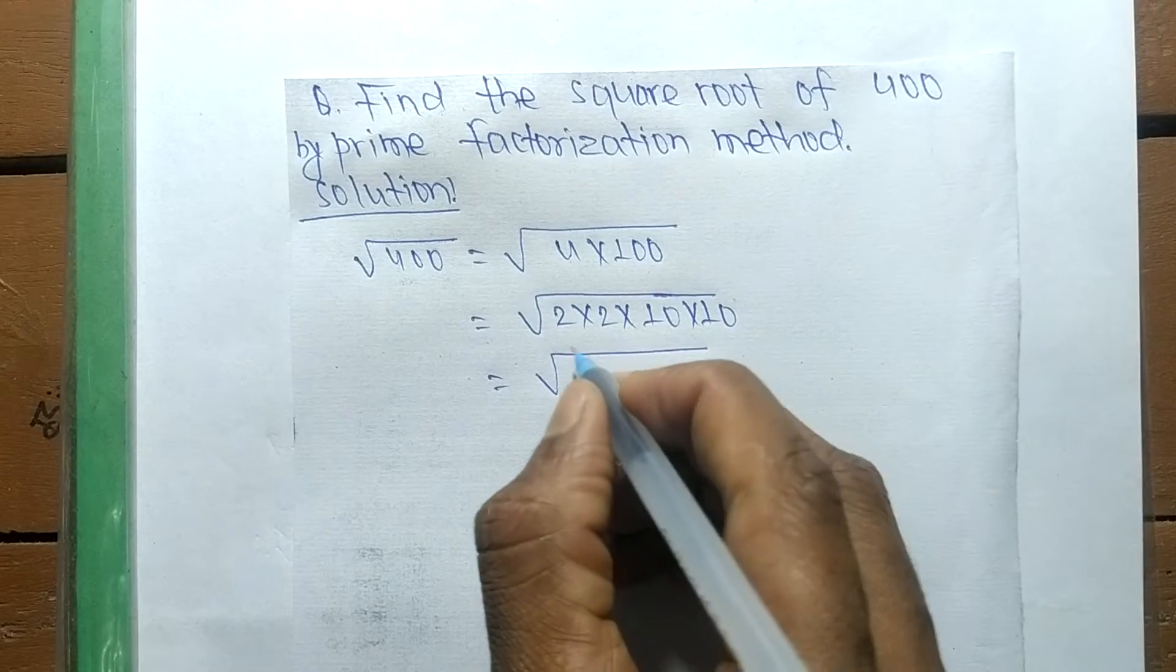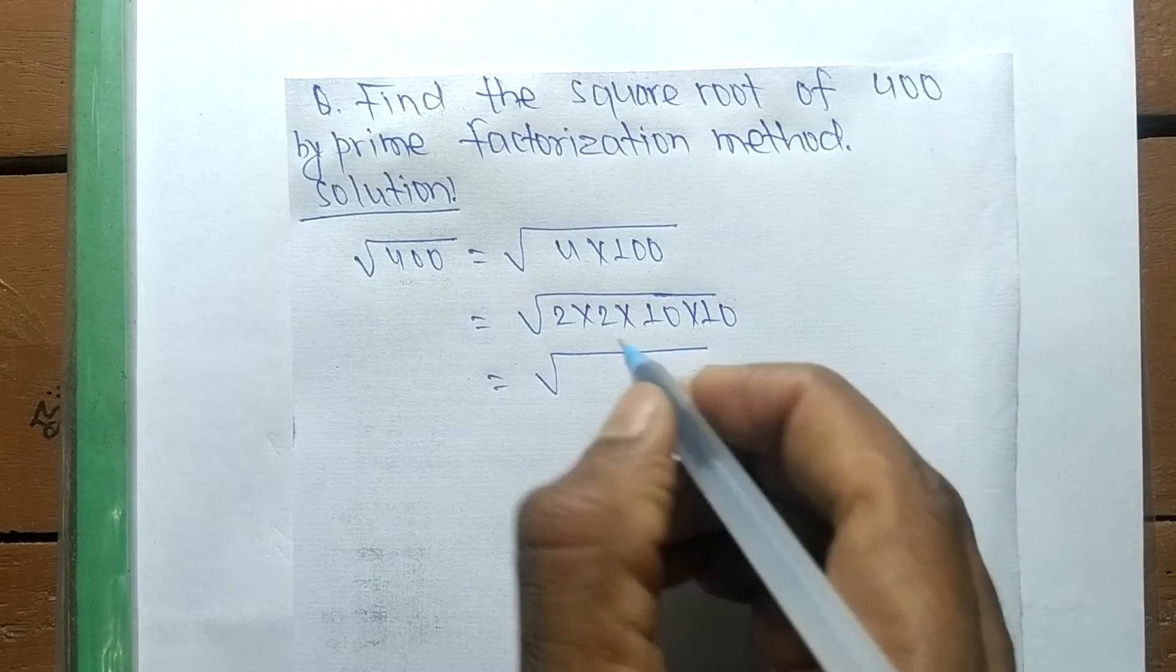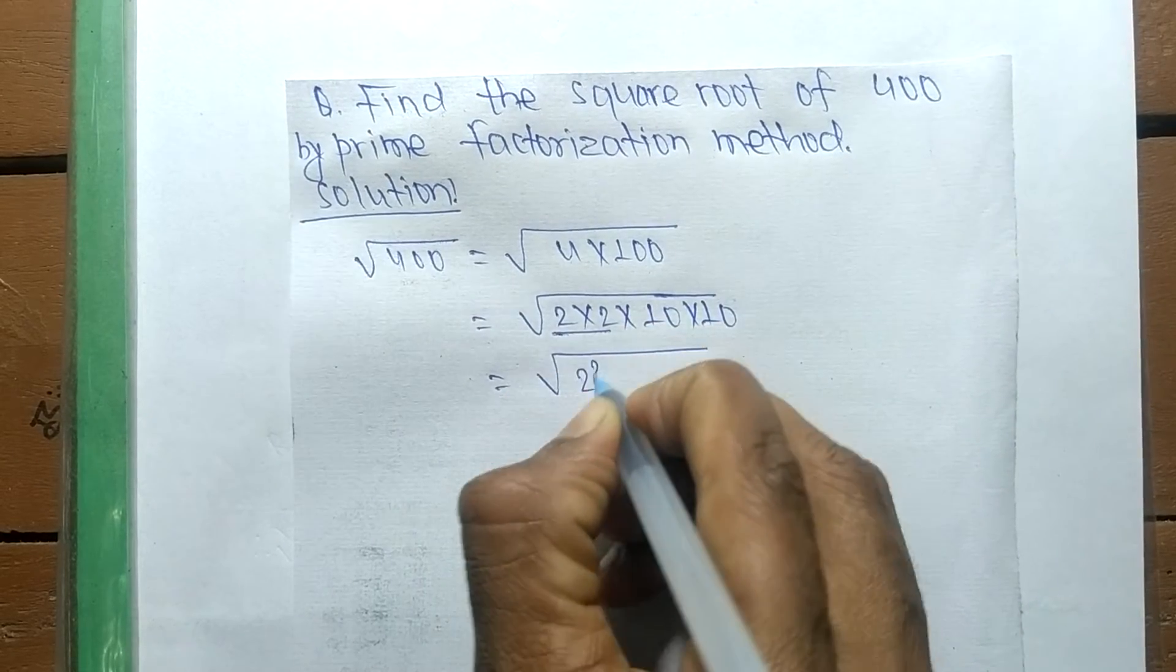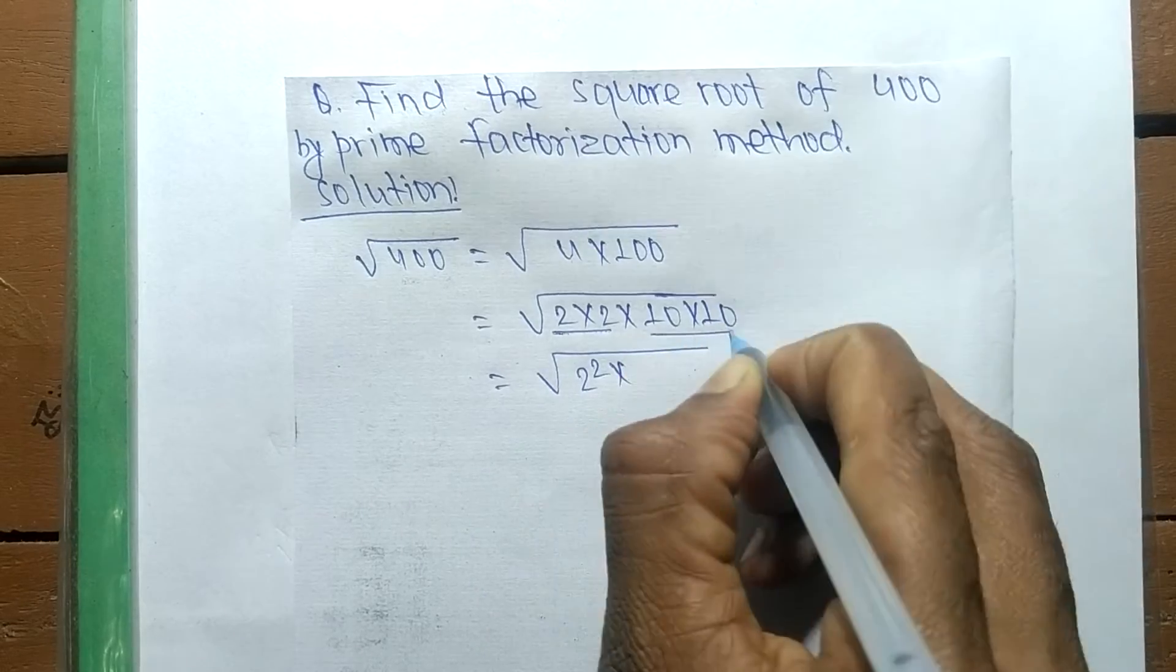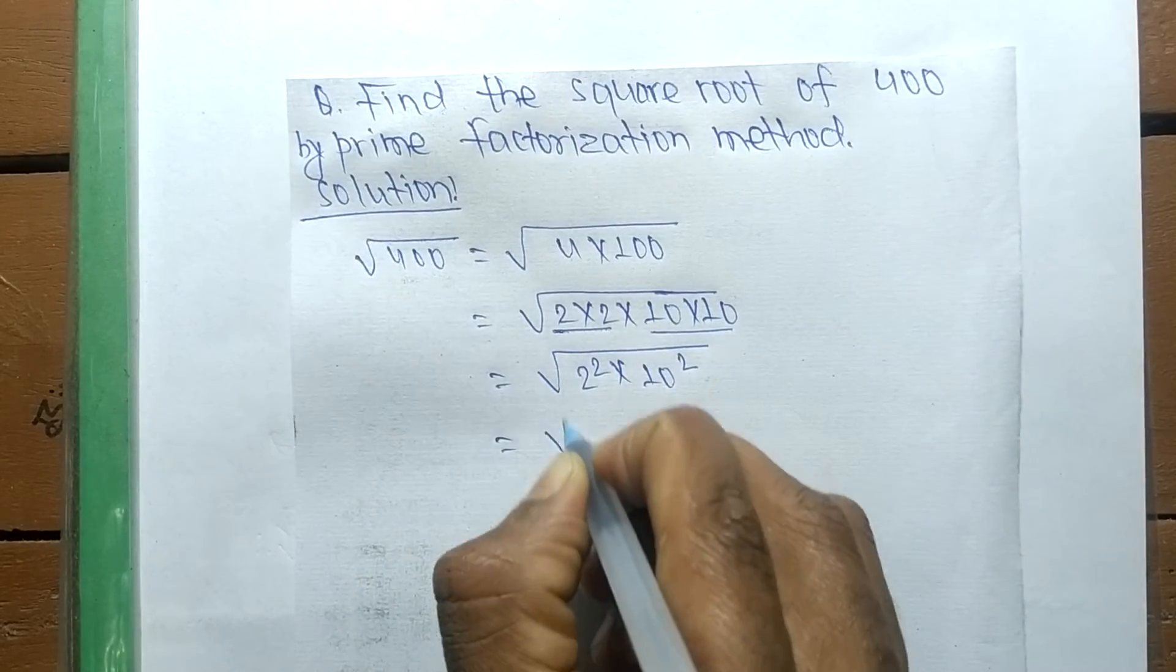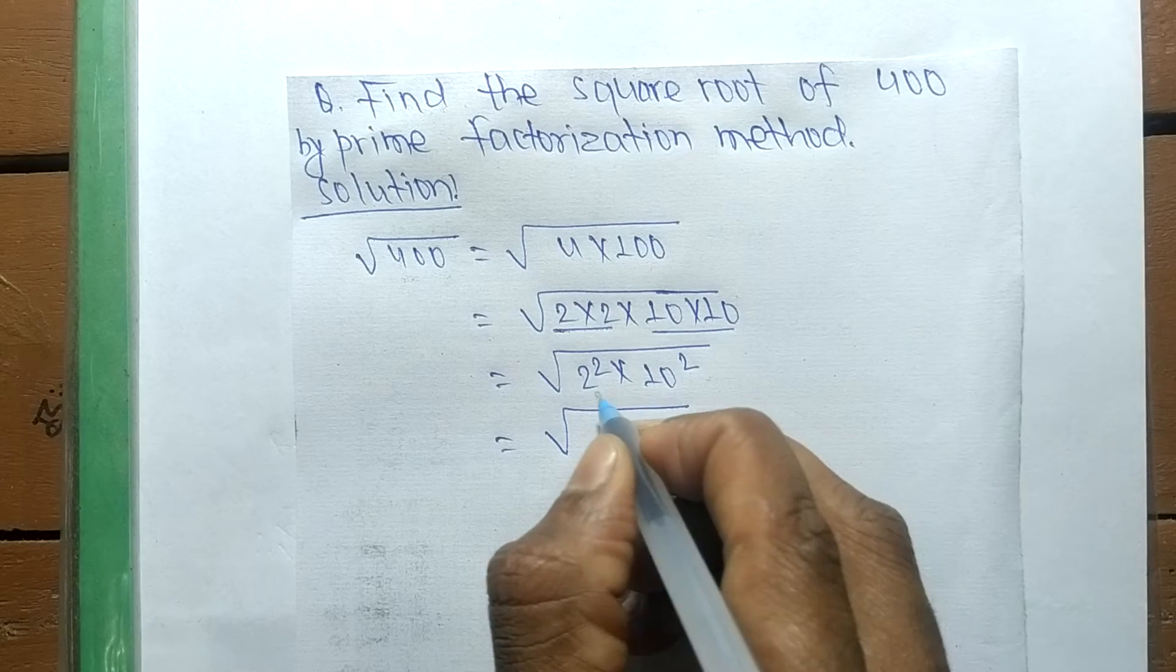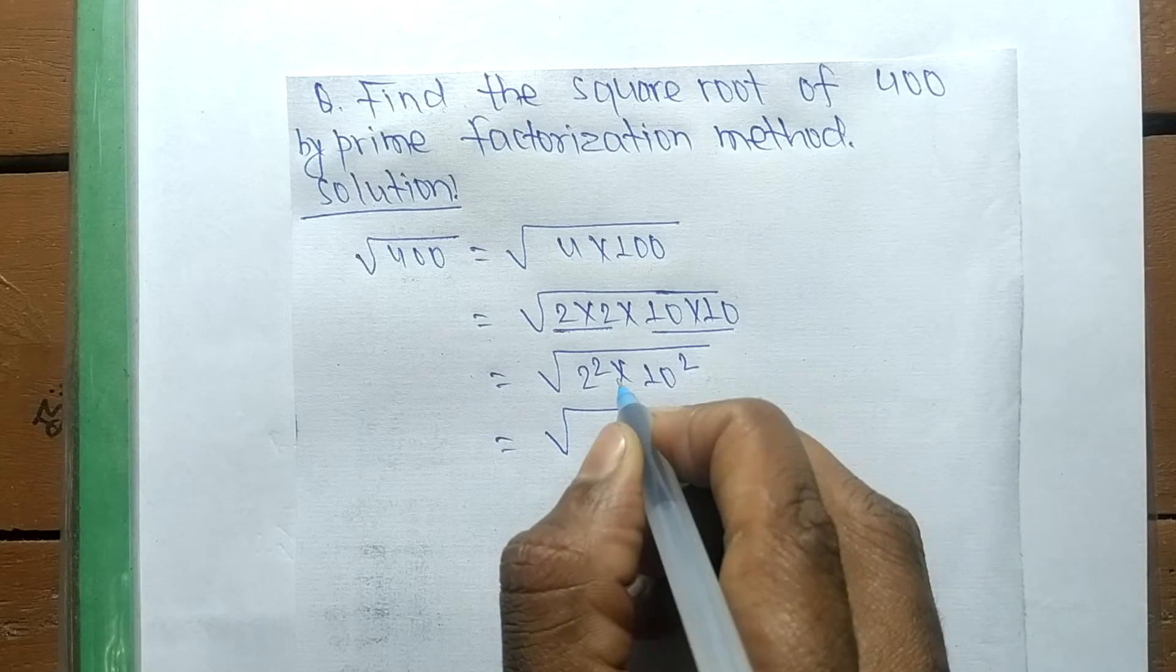So now we make the square of all these numbers: 2 into 2 is 2 squared, and 10 into 10 is 10 squared. A square is present in both numbers, so we take the square as common.